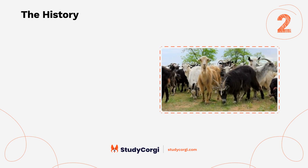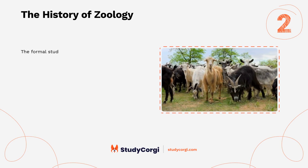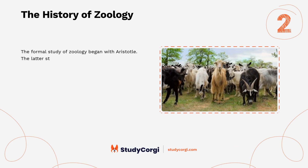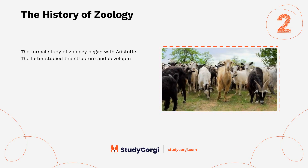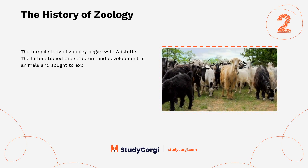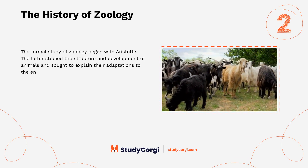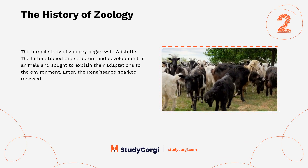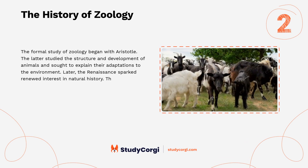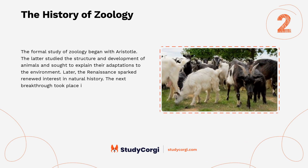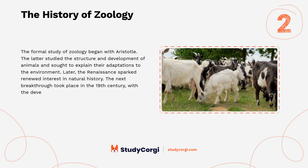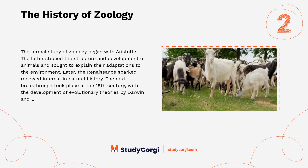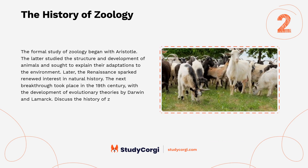The History of Zoology. The formal study of zoology began with Aristotle, who studied the structure and development of animals and sought to explain their adaptations to the environment. Later, the Renaissance sparked renewed interest in natural history. The next breakthrough took place in the 19th century with the development of evolutionary theories by Darwin and Lamarck. Discuss the history of zoology in your paper.